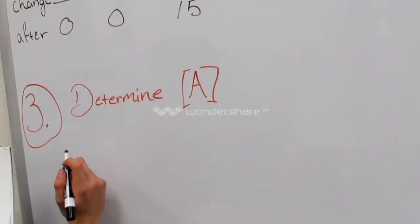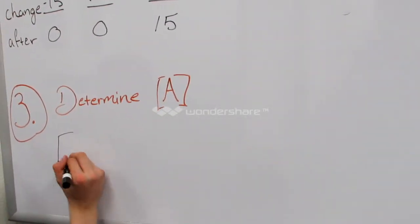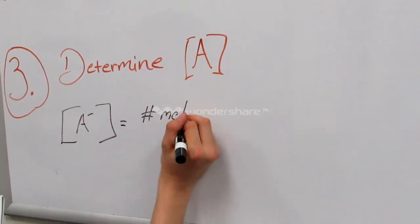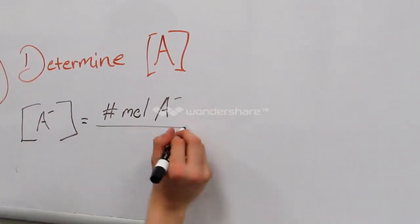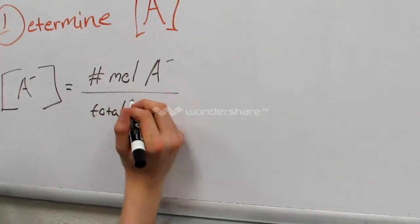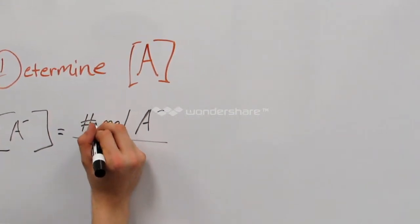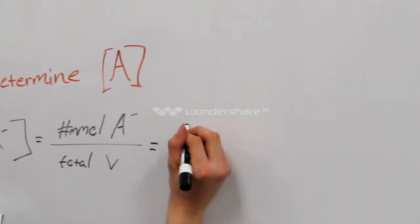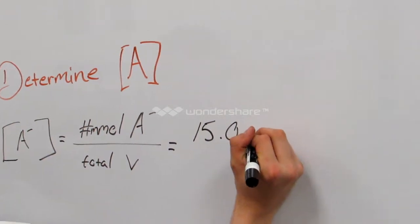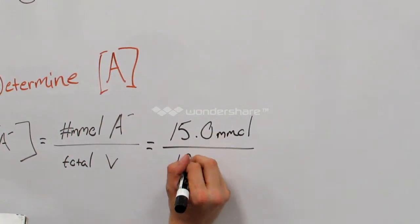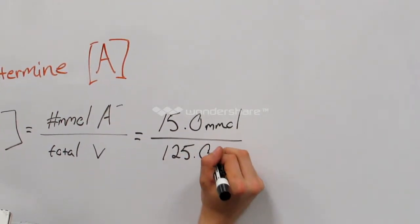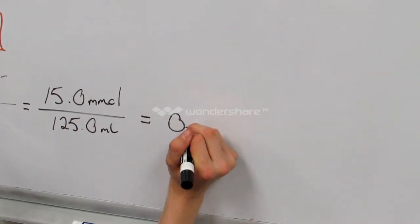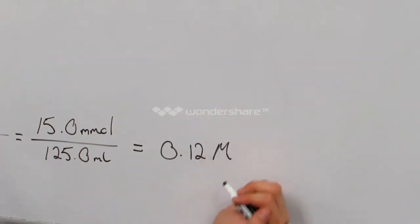Now we determine the concentration of A-minus — the Doing part of the mnemonic. To get this, you simply put the number of millimoles of A-minus over the total volume of the whole solution, including the volume of the titrant and the acid added. You should have 15.0 millimoles over 125.0 milliliters of the whole solution, which gives you 0.12 molar concentration for A-minus.